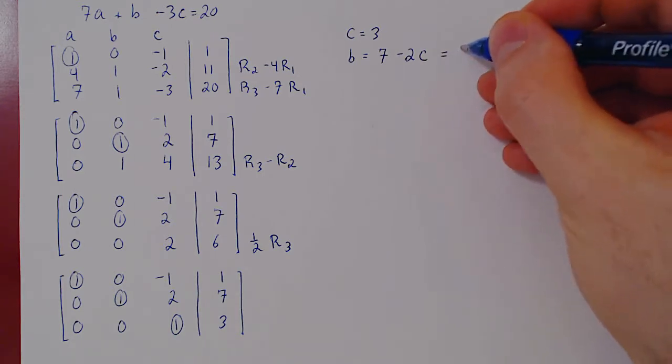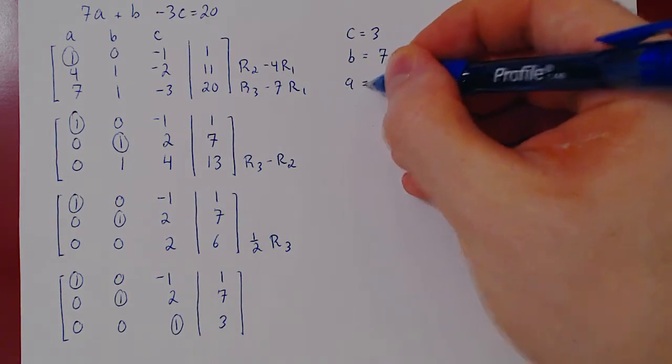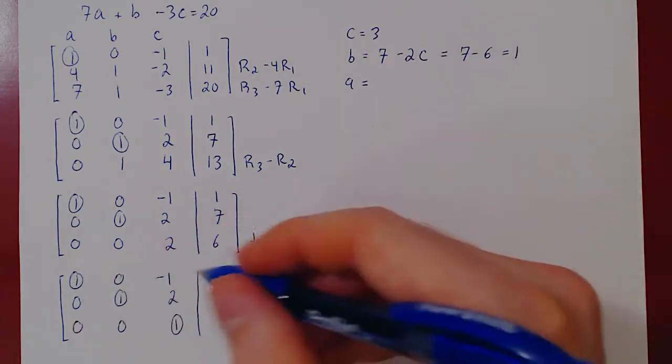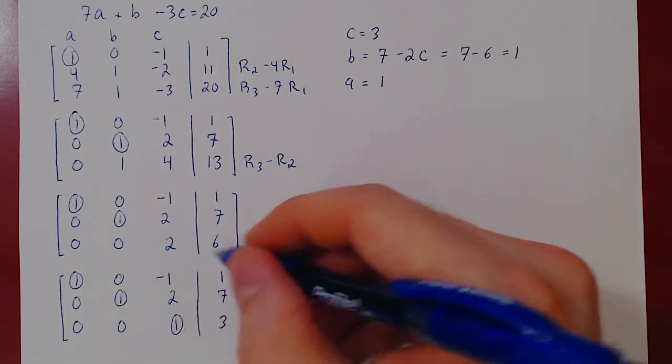But we know that c is 3, so we get 7 minus 6, which is quite simply 1. And finally, let's solve for a. a is equal to 1. There is a negative c on the left. On the right, it will become a positive c.